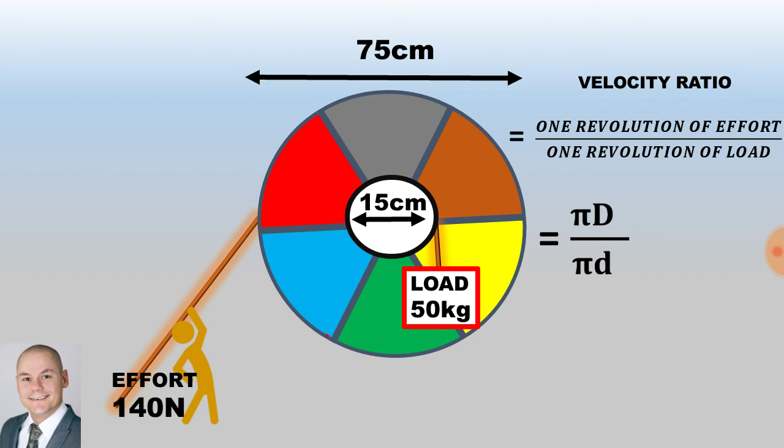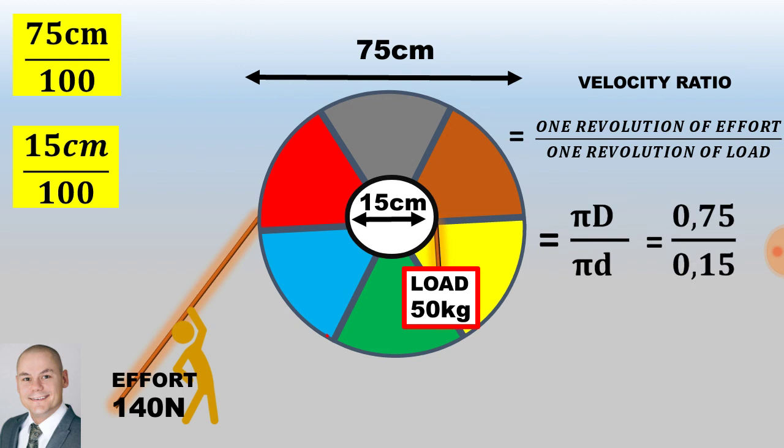First we must convert centimeters into meters so therefore we need to divide by 100. So the large diameter will be 75 over 100 and the small diameter will be 15 over 100. Therefore it will be pi multiplied by 0.75 and pi multiplied by 0.15.